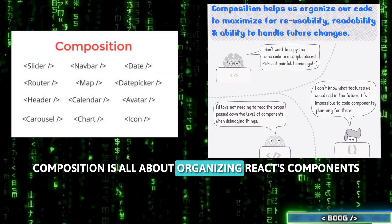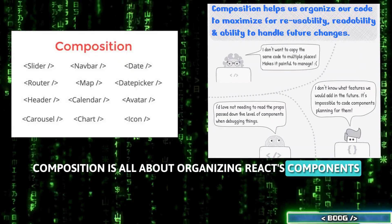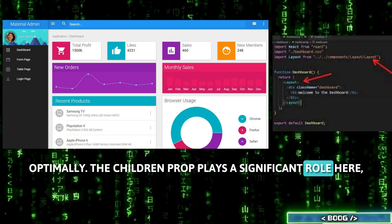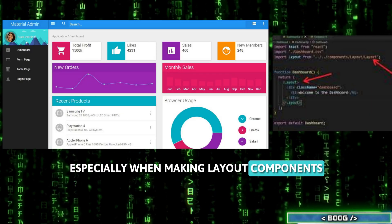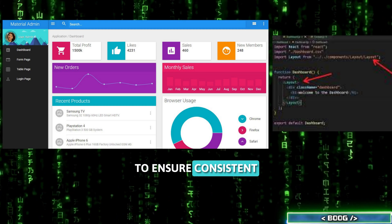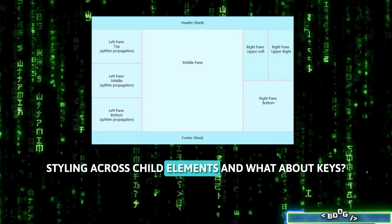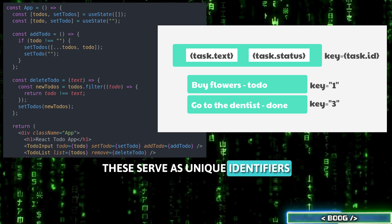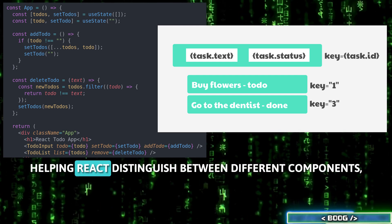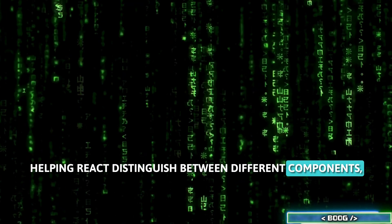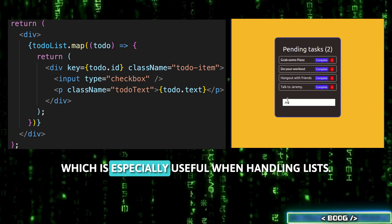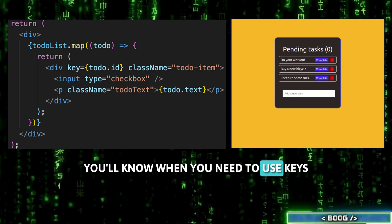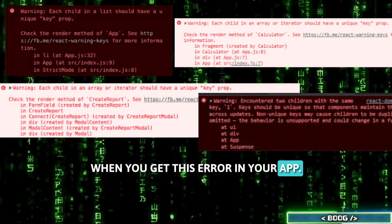Composition is all about organizing React's components optimally. The children prop plays a significant role here, especially when making layout components to ensure consistent styling across child elements. And what about keys? These serve as unique identifiers, helping React distinguish between different components, which is especially useful when handling lists. You'll know when you need to use keys when you get this error in your app.